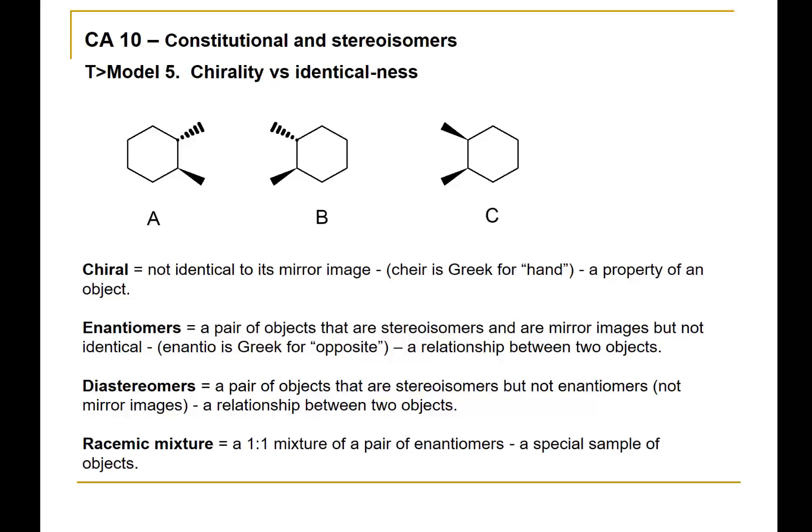We've already seen a few examples of diastereomers — those associated with ring structures and those associated with carbon-carbon double bonds.